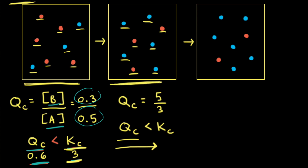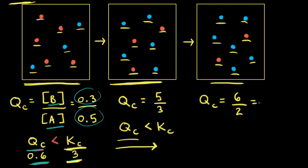Comparing the second and third particulate diagrams: in the second we had 5 blues and 3 reds; in the third we have 6 blues and 2 reds, so the amount of blue has increased and red has decreased. Calculating QC: 6 divided by 2 equals 3. QC equals 3, and KC also equals 3. Therefore QC equals KC, and this reaction is now at equilibrium.